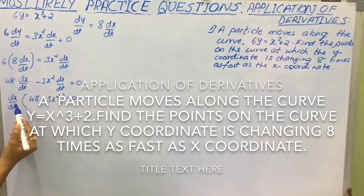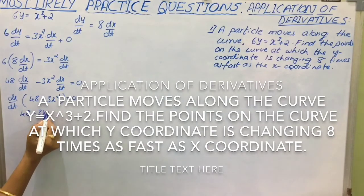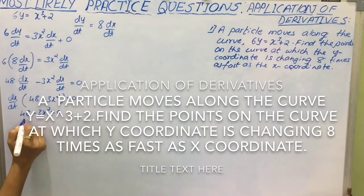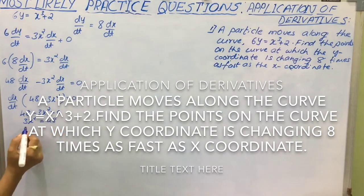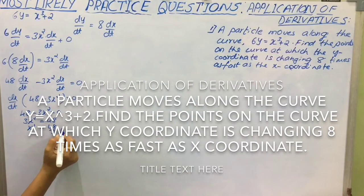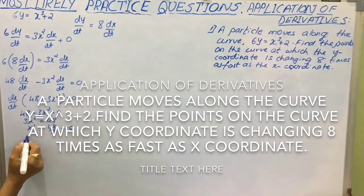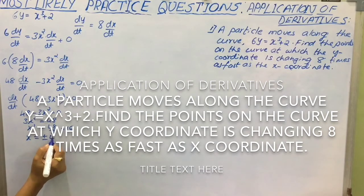But dx by dt is not equal to 0. Therefore 48 minus 3x square equal to 0. Therefore 3x square equal to 48. x square equal to 48 by 3 that is 16. So x is equal to root 16 plus or minus 4.